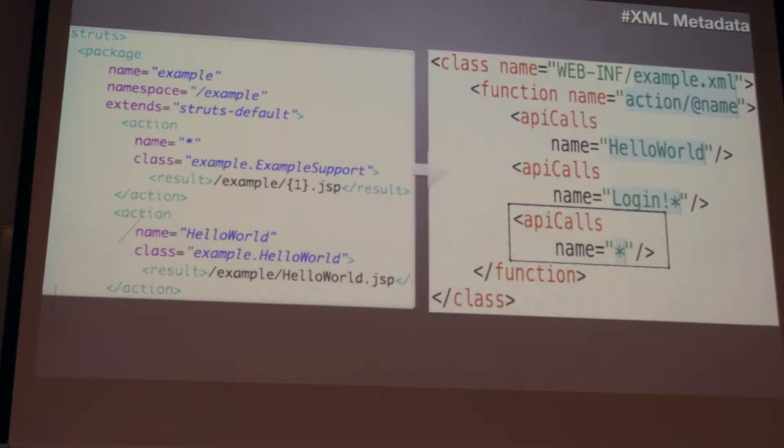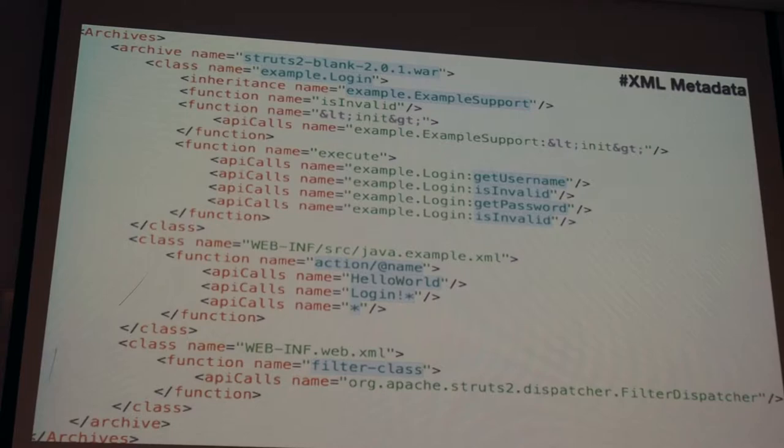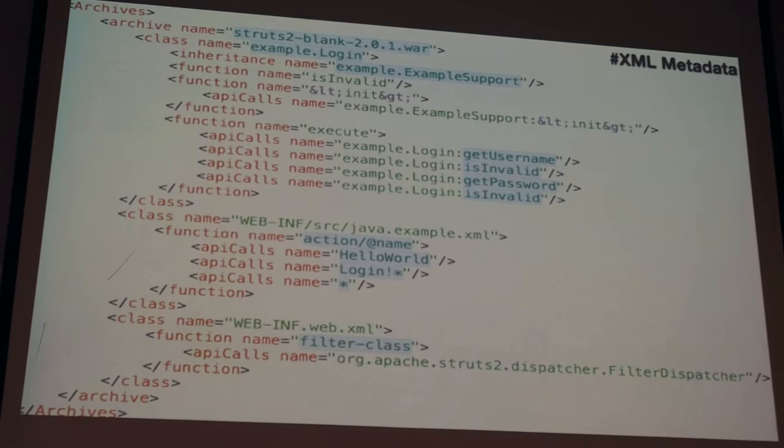This way I go across every single binary submitted to us, every single archive inside those binaries, and every single class file, XML file, JSP file — you name it. And I start extracting things like this and dumping them into XML fragments. This is how the final XML file looks for me — it shows the name of the archive, what classes are being defined inside it, what inheritance, function calls, and so on. Similarly from configuration files.